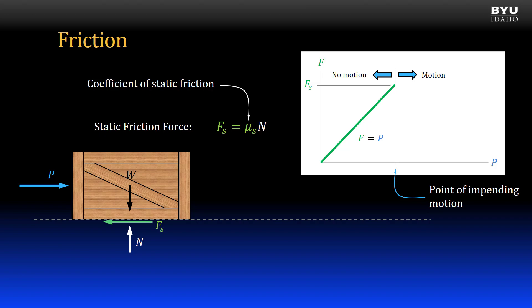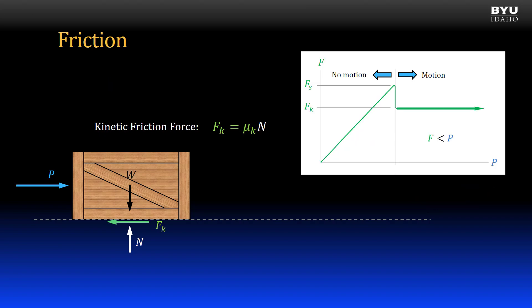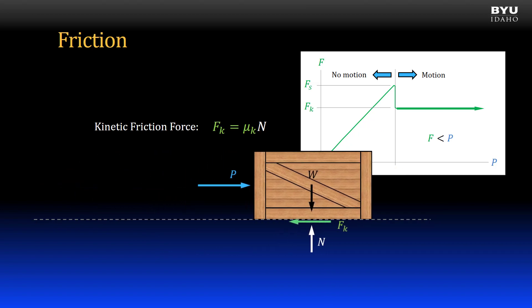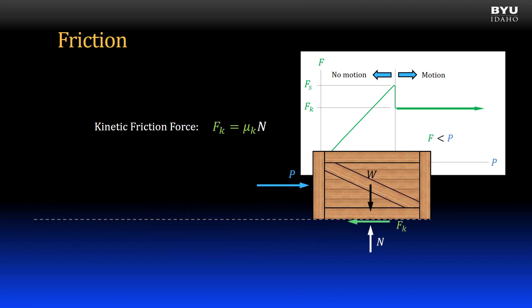What happens when we slightly increase the applied load? An additional increase in the applied load P will cause the crate to move. Note that there will still be a friction force present, but it is not a static friction force — it is a kinetic friction force, which is typically less than the static friction force.